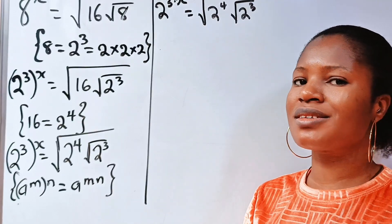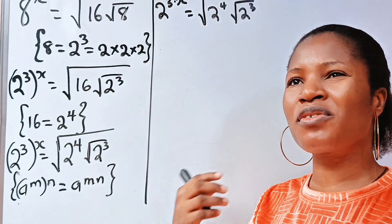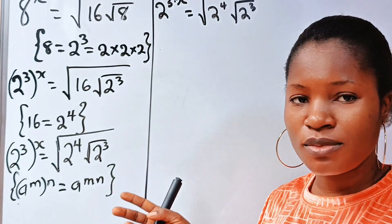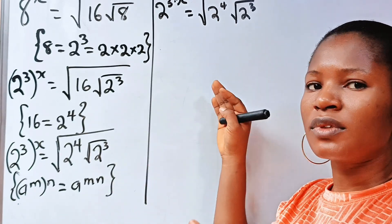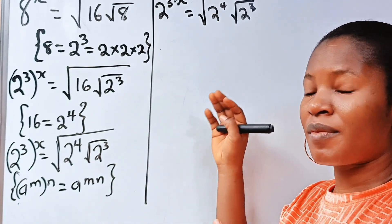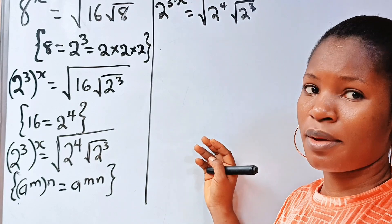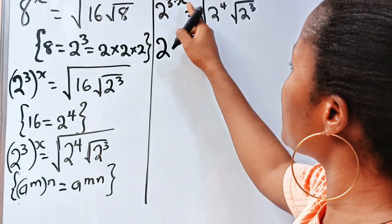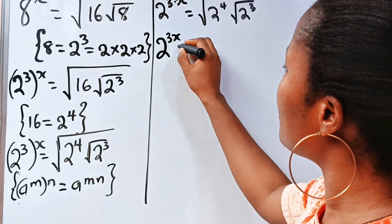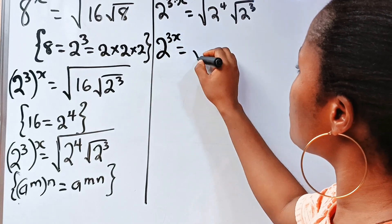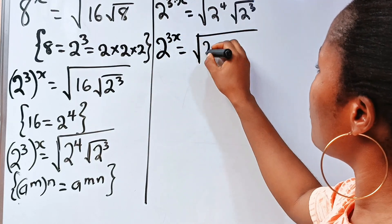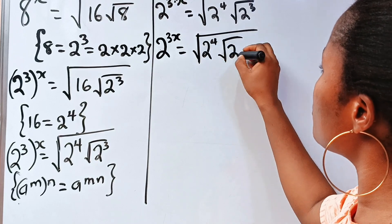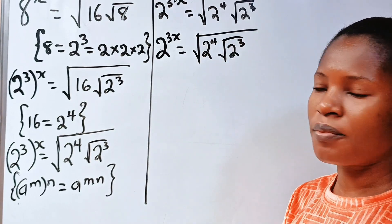I'm going to be taking this step by step so that even if you don't understand my accent, from what I'm writing you will also understand what I'm doing. That is why I'm writing down every single step. So now we have 2 to the power of 3x is equal to the square root of 2 to the power of 4 times the square root of 2 to the power of 3.